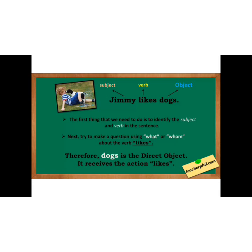For example: 'Jimmy likes dog.' First of all we find what is the subject and what is the verb. Our subject is Jimmy and our verb is 'likes'. Then we make a question using 'what' or 'whom' about the verb — 'What does Jimmy like?' or 'Jimmy likes what?' The answer is 'dog', therefore dog is the direct object. It receives the action 'like'.